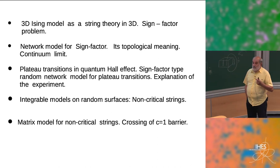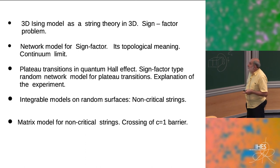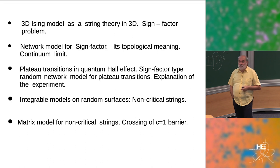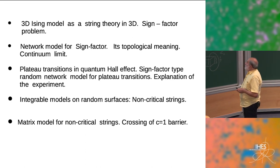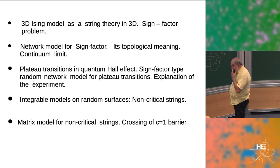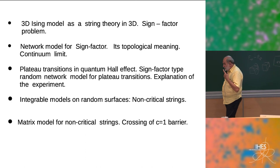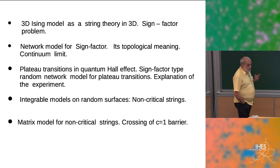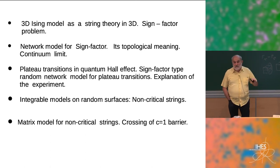I will show that numerical analysis of this model produces the experimental value measured in the integer quantum Hall effect. And then I will show that all this Ising model sign factor gives insight into how one can formulate any models on fluctuating surfaces — that's crucial for non-critical strings.